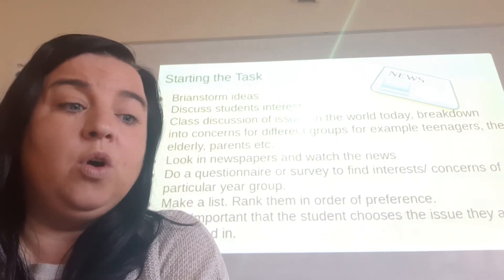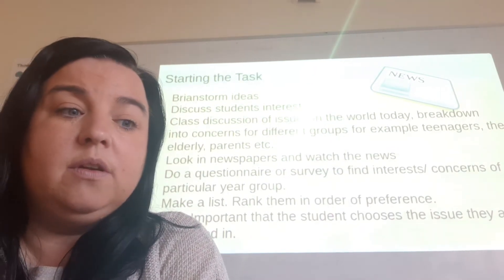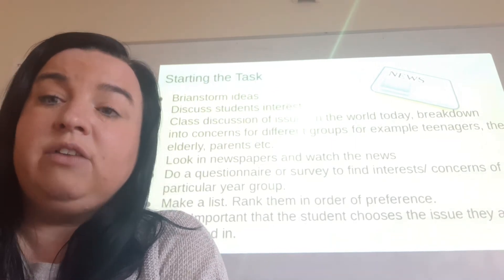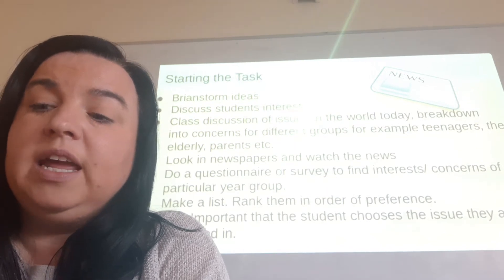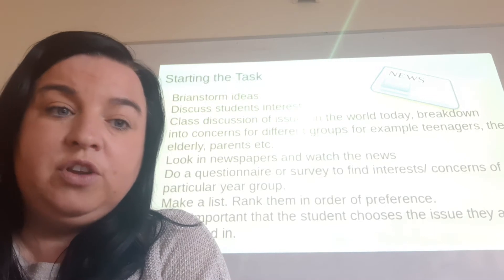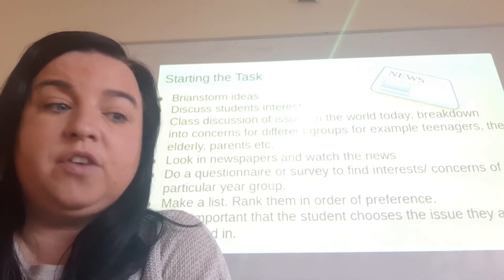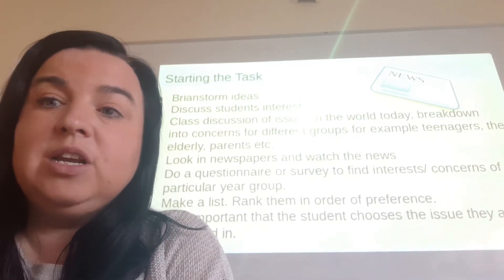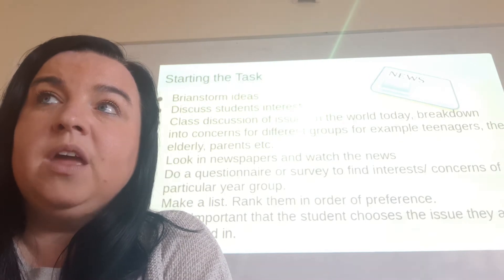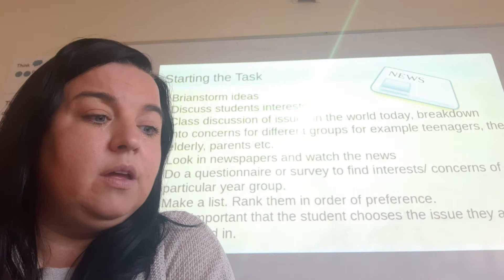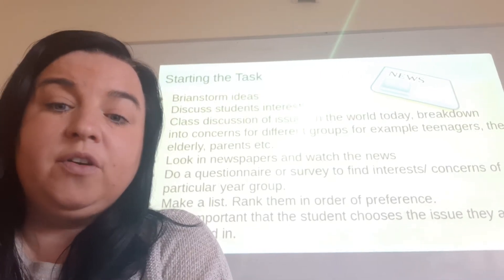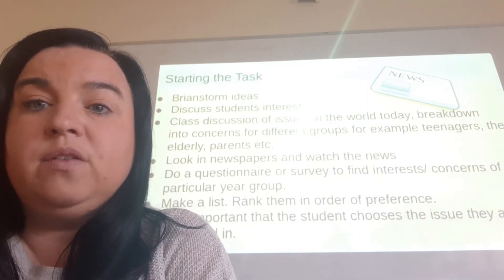Have a class discussion on what is happening in the world today. Break these down into different groups — what's concerning teenagers, what's concerning parents, what's concerning the elderly — to break down the different areas of concern by the groups of people they are affecting. It's also a really good idea to look at newspapers, to see what's in the news at the moment locally in local newspapers, nationally in national newspapers, and even news from around the world. They can watch the news and look at different news stations from around the world. Do a questionnaire or survey to find interests and concerns of a particular year group — maybe first years, transition years, or sixth years — to ask them about what is concerning them at the moment.